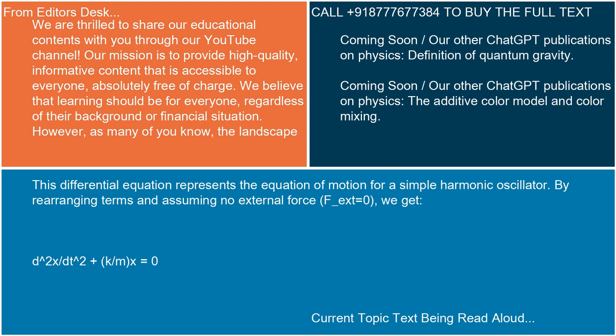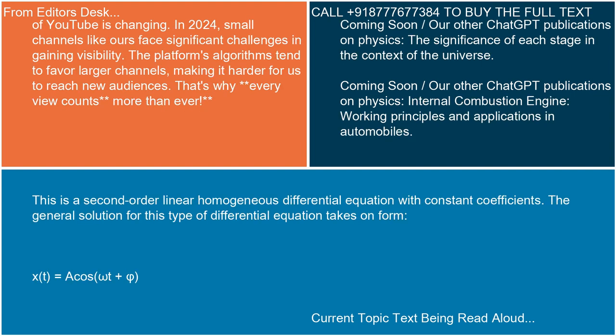By rearranging terms and assuming no external force, F(t) equals 0, we get d²x/dt² plus (k/m)x equals 0. This is a second-order linear homogeneous differential equation with constant coefficients. The general solution for this type of differential equation takes the form x(t) equals A·cos(ωt plus φ).